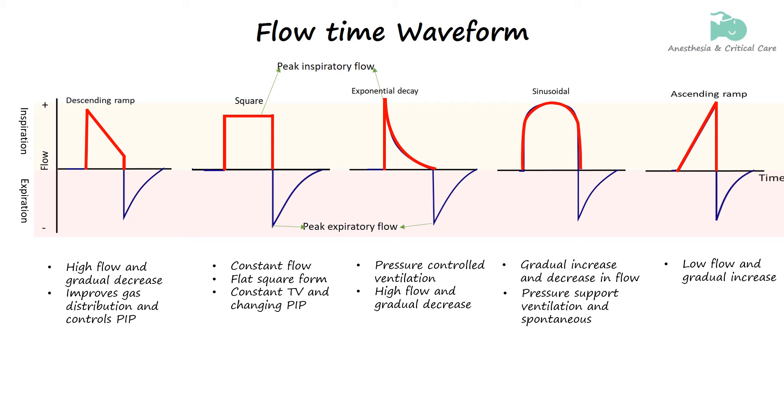It's same like descending pattern except that in the descending ramp the flow decline is linear at the same rate, whereas in exponential decay, the flow decline is gradual giving it a curved appearance.